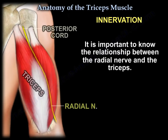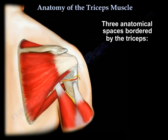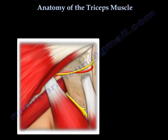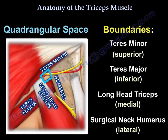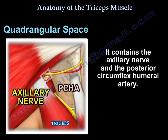It is important to know the relationship between the radial nerve and the triceps. There are three important anatomical spaces bordered by the triceps. The first space is called the quadrangular space, and its boundaries are the teres minor superiorly, the teres major inferiorly, the long head of the triceps medially, and the surgical neck of the humerus laterally. The quadrangular space contains the axillary nerve and the posterior circumflex humeral artery.